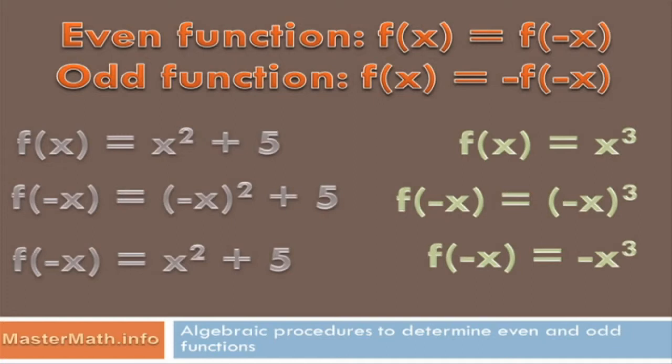Now, minus x cubed is minus 1 times x cubed. In other words, if I multiply function of x by negative 1, I'll get the function of minus x. Function of x equals negative the function of minus x. Now, there's one other thing you need to notice.